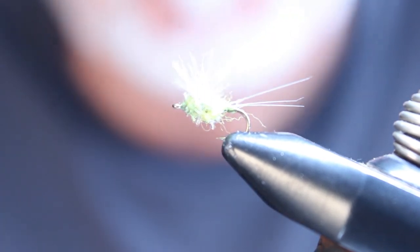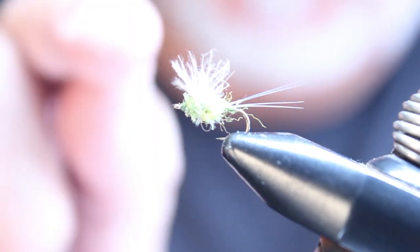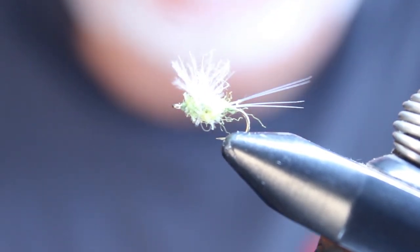Like I said, this is a good tailwater fishery pattern. It imitates Baetis very well and can be tied in other colors to imitate the local mayfly species.